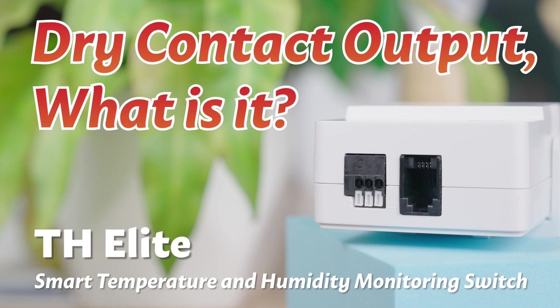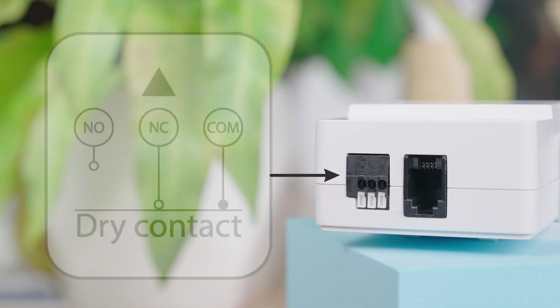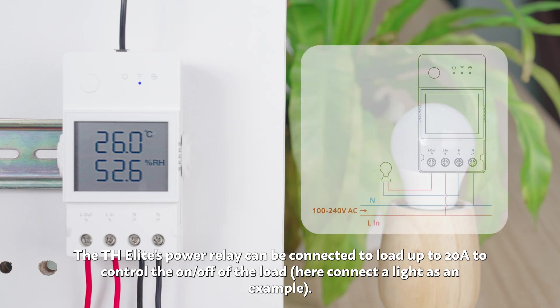Dry contact output, what is it? The TH Elite's power relay can be connected to loads up to 20A to control the on/off of the load.